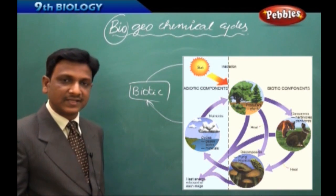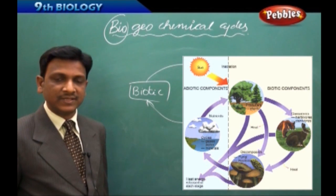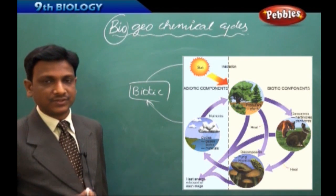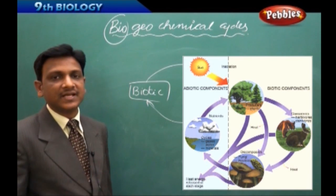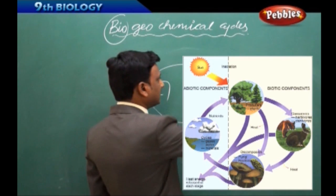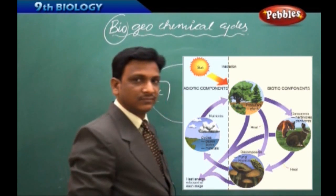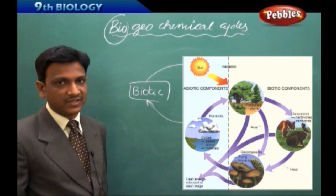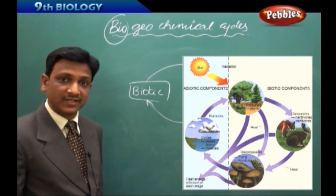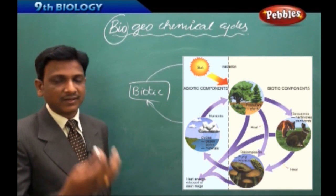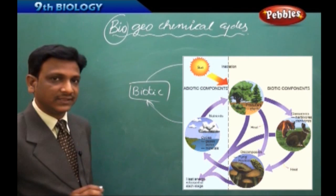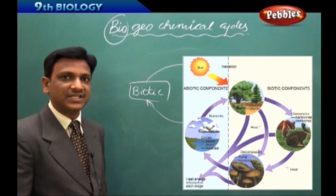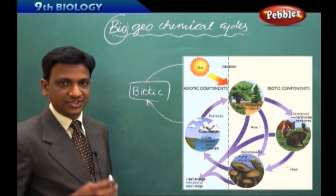The ecosystem is dynamic — change always happens. Carbon dioxide from the air enters plant bodies, goes to animals, and when animals respire or die, CO₂ goes back into the atmosphere. Even though it is dynamic, the system is stable. For example, oxygen remains at 21% in the atmosphere — it is continuously used by organisms, yet its percentage stays constant.